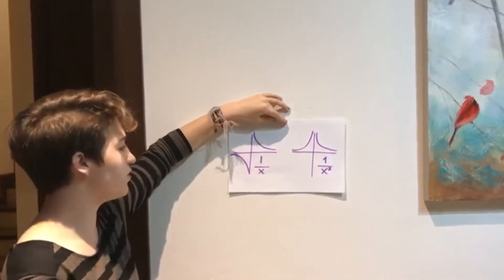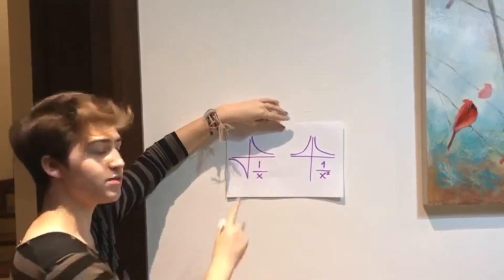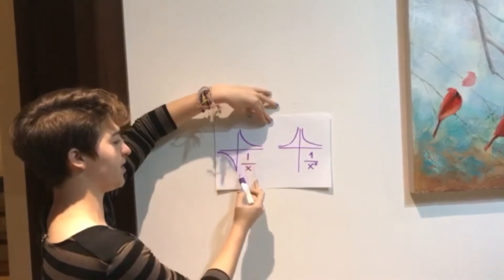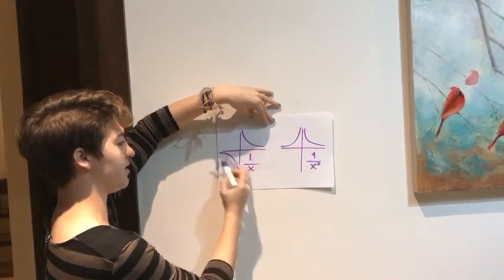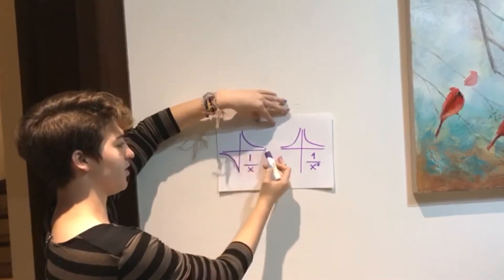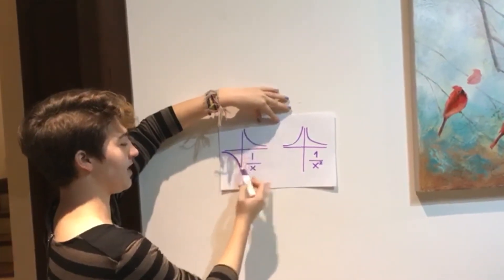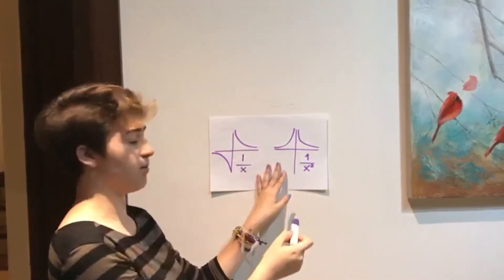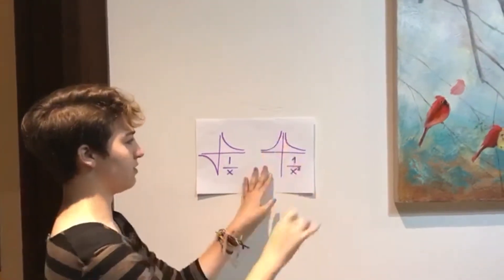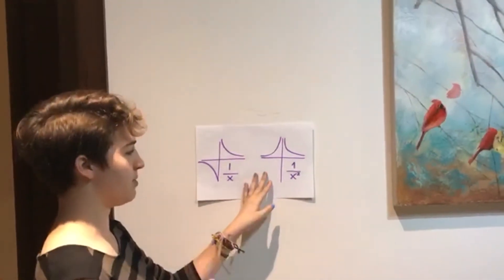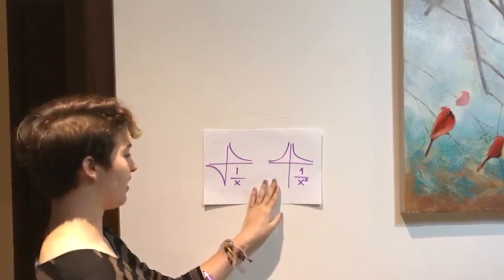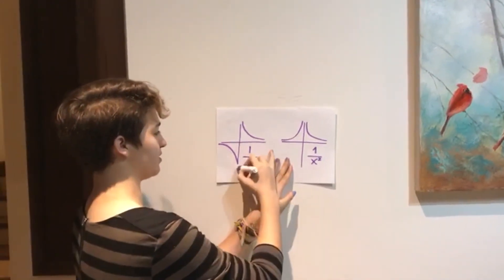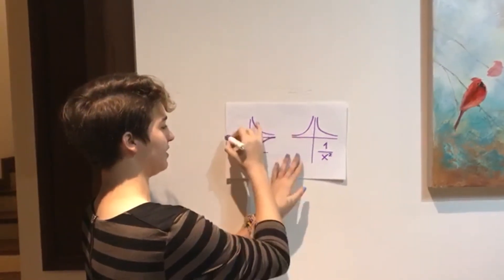When you have one over x, your graph looks like two curves — one here and one here — with the vertex and the asymptotes. When you have one over x squared, both lines are supposed to be positive. If you have a negative one, your lines are going to be reflected downward.